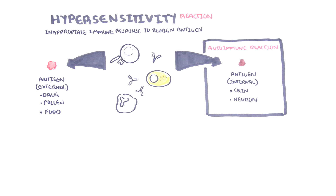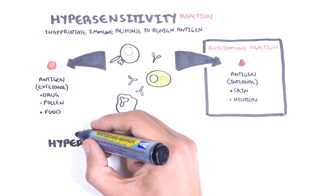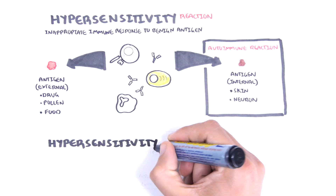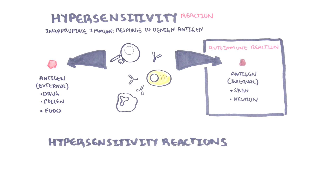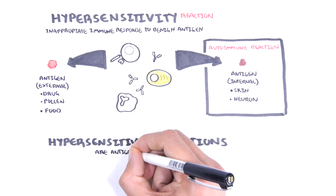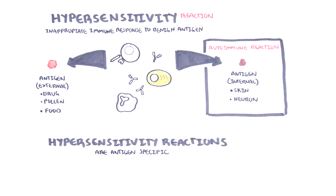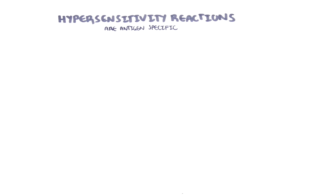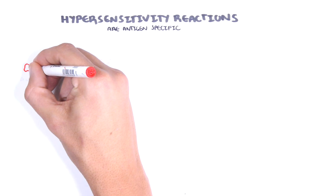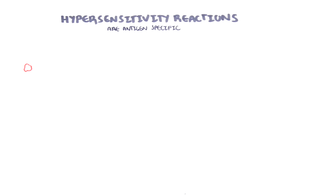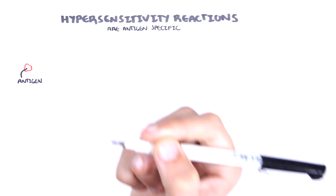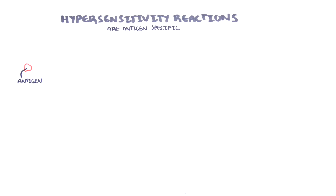Hypersensitivity reactions can be the mechanism of diseases in some autoimmune reactions. Hypersensitivity reactions are antigen specific, because the immune system is educated and primed towards the antigen after the first exposure.